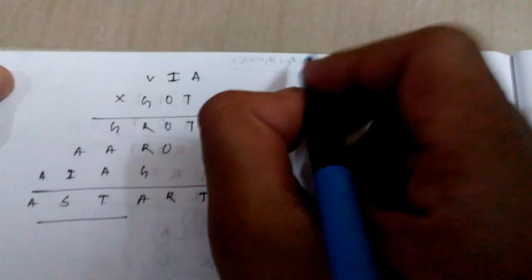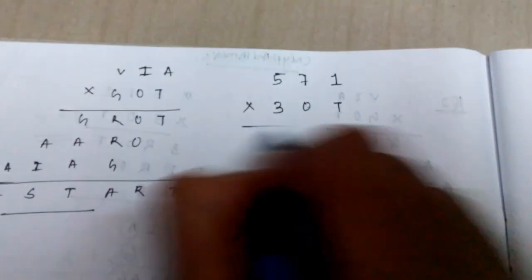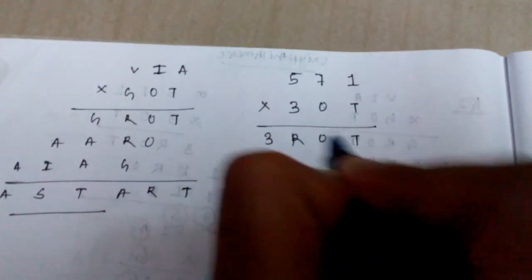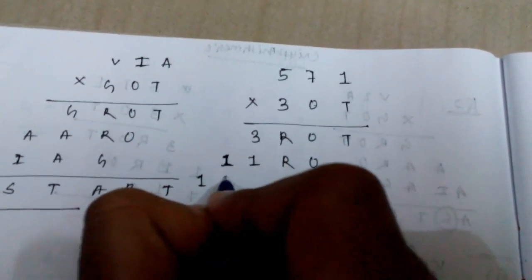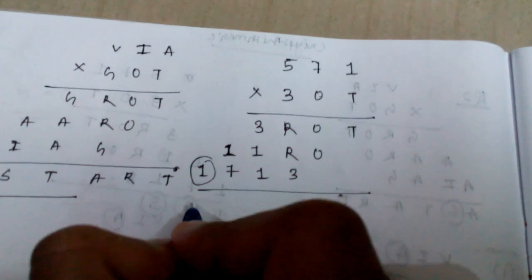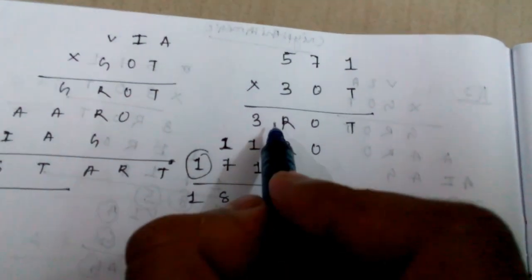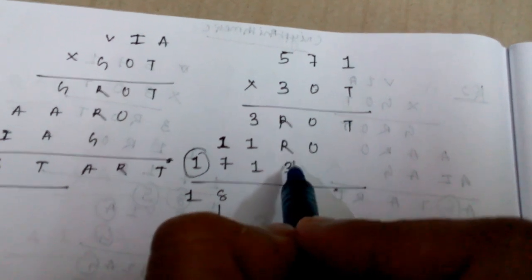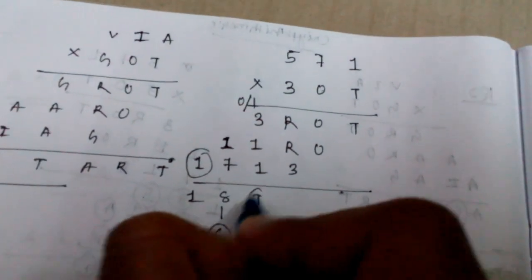Putting all values: V equals 5, I equals 7, A equals 1. So 1 into G means 3, into 1 gives 3, 3 into 7 is 21, 3 into 5 is 15 plus 2 is 17 — that is 1713. Now in the original question with these values, A is 1 and I is 7, G is 3. Adding 17 plus 11 gives 18 — wait, 1 plus 7 equals 8, so S equals 8.